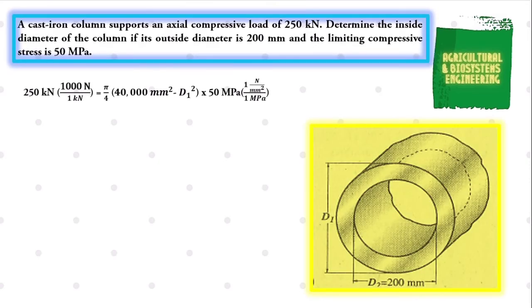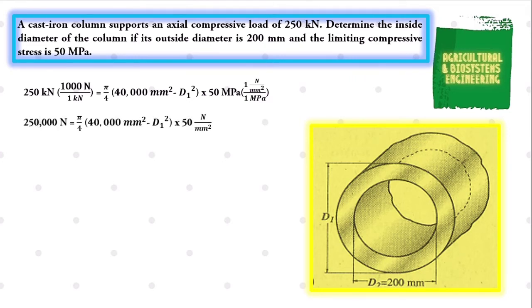We have to convert the load of 250 kN to newtons using the conversion factor 1 kN equals 1000 N, and the stress of 50 MPa to newtons per square millimeter using the conversion factor 1 MPa equals 1 N per square millimeter. After converting, we have 250,000 N equal to pi over 4, multiplied by 40,000 square millimeters minus D1 squared, times 50 N per square millimeter.